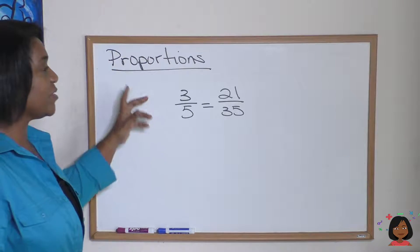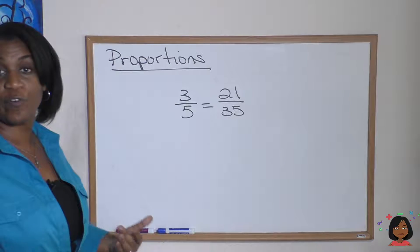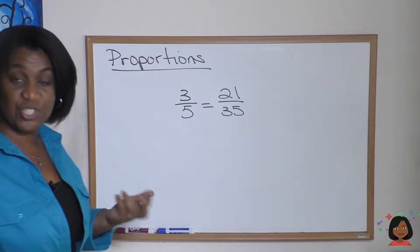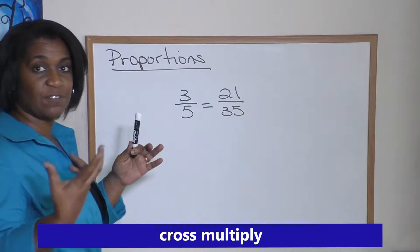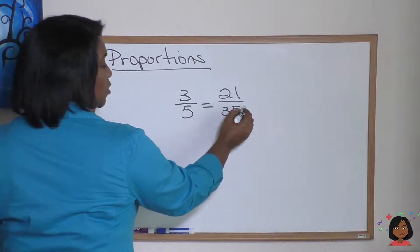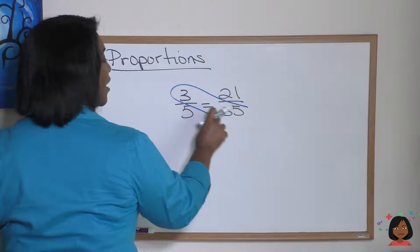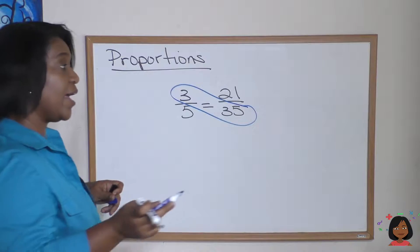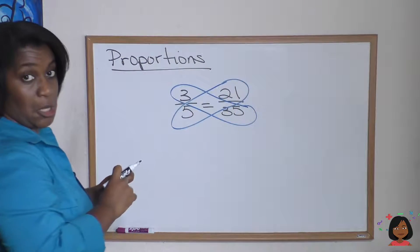Let's take a look. We are saying that 3 fifths equals 21 over 35, and the way that we check that this is true is we cross multiply and see if those numbers equal each other. So when I say cross multiply, we're going to multiply this 35 times the 3, and then we're going to multiply 21 times the 5. Let's do it.